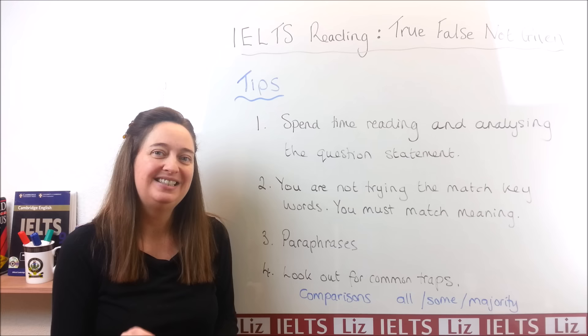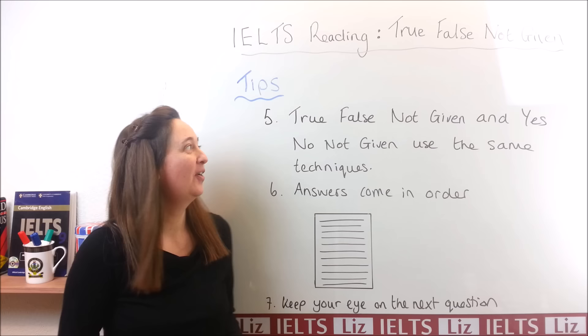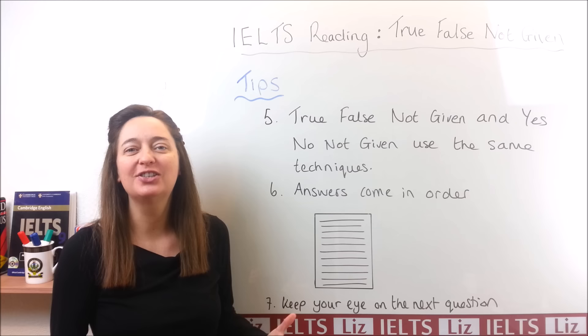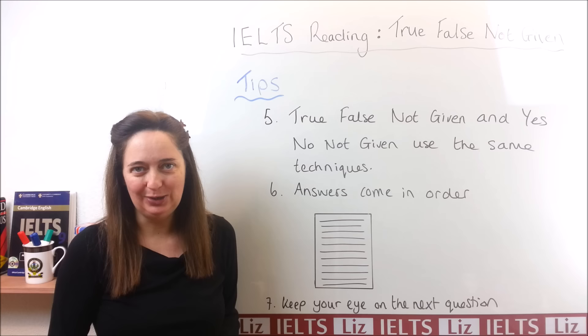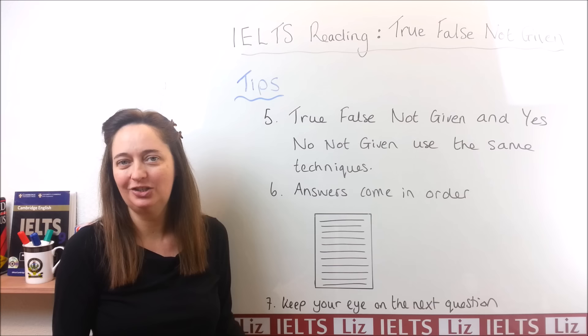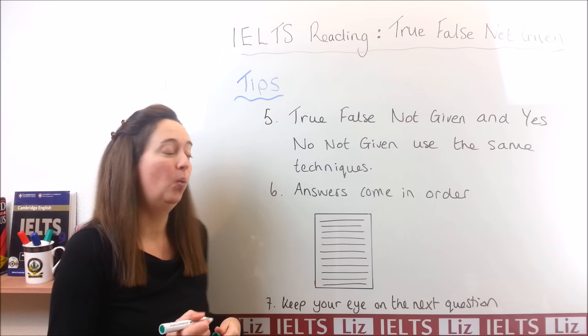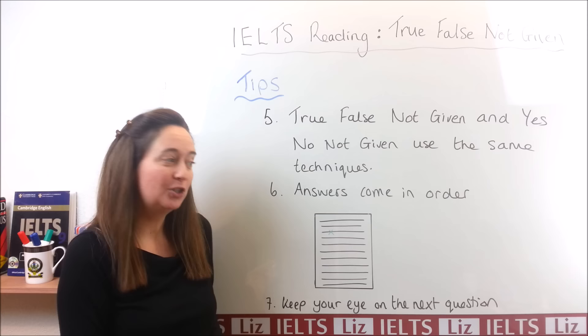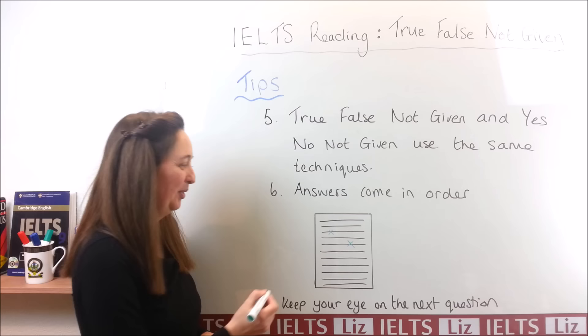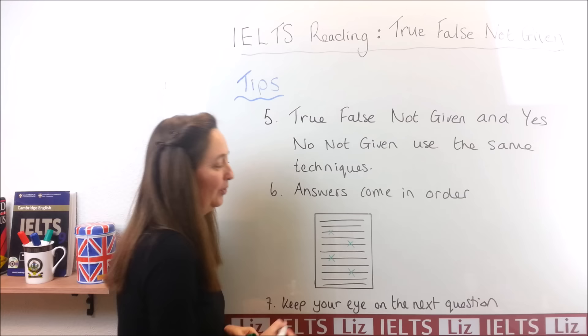Tip number five: the true, false, not given and yes, no, not given questions use the same technique. So everything we learned today for true, false, not given, you can use for yes, no, not given. Tip number six: the answers come in order. This is such an important tip. It means that the answer to question number one will come first in the passage, the answer to question number two will follow that, and so on. Each question follows the order of information in the passage.